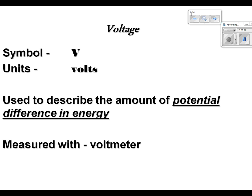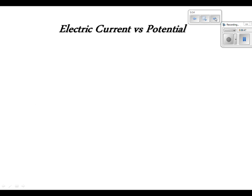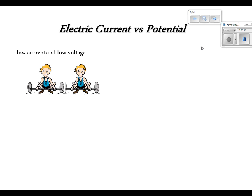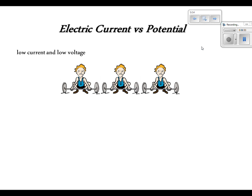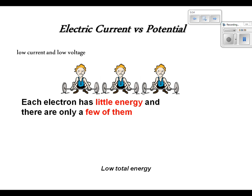So, the pictures try to describe it. Electric current versus potential. If you've got low current and low voltage, you've got a little weakling here. You don't have very many of them. Each electron has very little energy, and there's only a few of them. They're not much good. Low total energy. They're not very strong, and there's not very many of them equals low total energy.